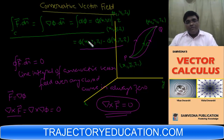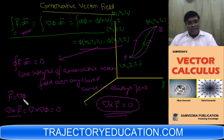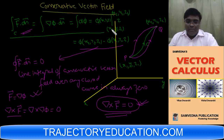To summarize: conservative vector fields are those expressed as the gradient of a scalar. From this, the line integral between P and Q does not depend on the curve — it is the same for every path. Consequently, the line integral over any closed curve is zero. And since del cross F is always zero for a conservative field, this gives you a practical way to check whether a field is conservative. Now we will look at a problem on this.